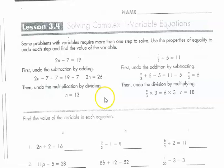As we always do, let's review the sample problem and then I'm going to work through a couple of these and then you should be able to do the rest on your own. So what it says, some problems with variables require more than one step to solve. Use the properties of equality to undo each step and find the value of the variable.